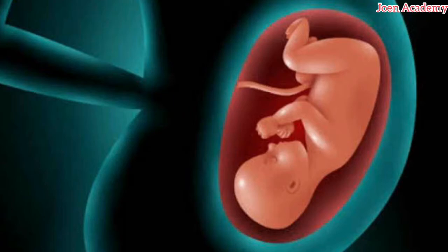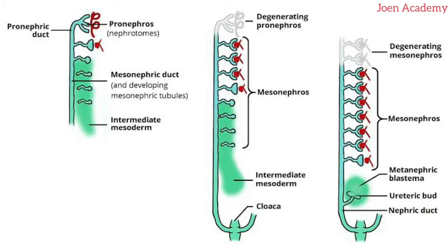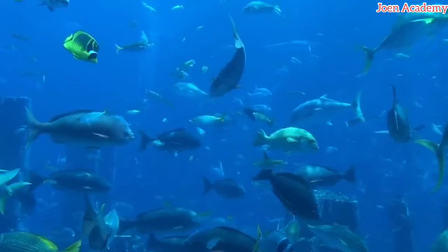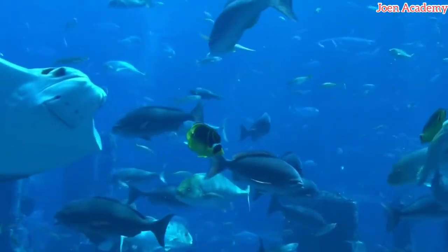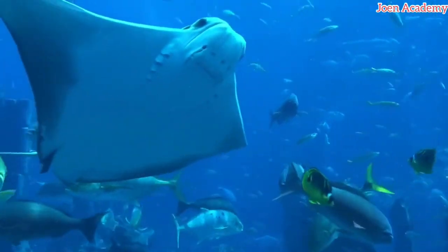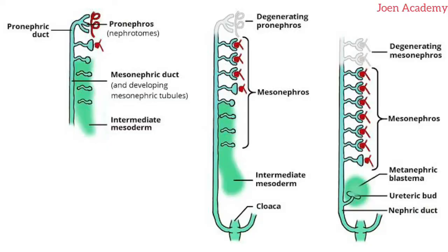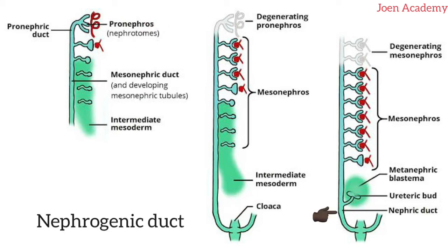In human beings, the pronephros disappear soon after it is formed, but in fishes and cyclostomes, they actually serve as a functional kidney. When the pronephros disappear, the nephric duct persists. It helps to convey urine to the cloaca. The nephric duct is also called the nephrogenic duct and it is formed in relation with the pronephros.